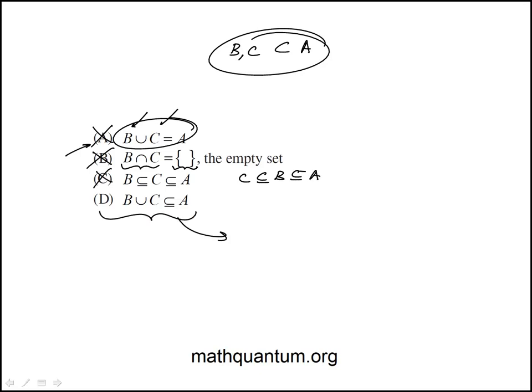And finally, D is the correct answer. That is B union C, all the collection of elements in B and C together, has to be a subset of A because both B and C are subsets of A. So the answer is D.